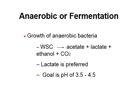Anaerobic and fermentation are kind of synonyms. When we grow anaerobic bacteria, we take the water-soluble carbohydrates and we might generate acetate, lactic acid, ethanol, or CO2. We want to create a fermentation that favors lactate production. Lactate generates acid ten times faster than acetate, while alcohol and carbon dioxide don't really generate acid. Lactate is what we need to drop to get to that pH of about four.